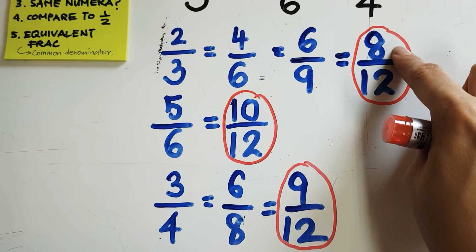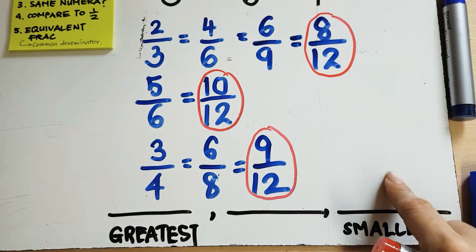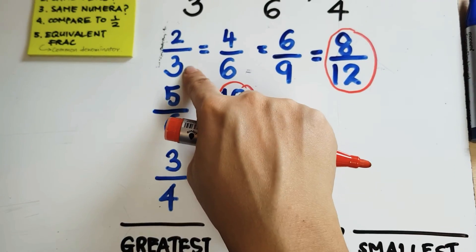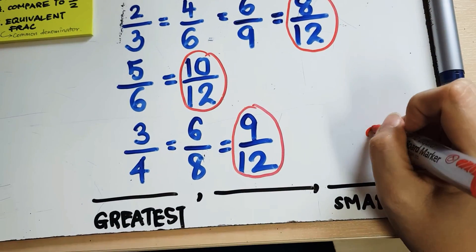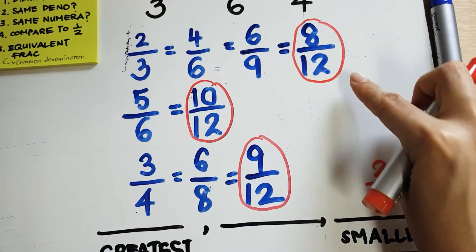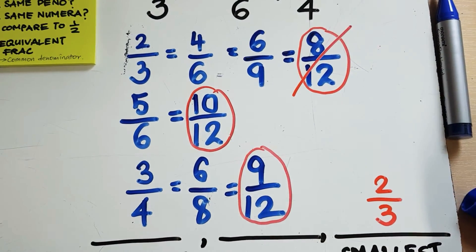8/12 is the smallest. Now, I'm not going to write 8/12 as the smallest fraction because 8/12 is equivalent to 2/3, and 2/3 is part of the question. So, I'm going to write 2/3 here. Next, so this is out. Which is bigger?